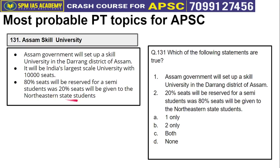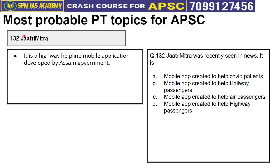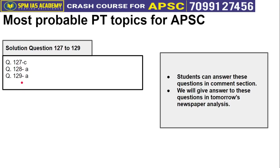Topic No. 132 is about Jatri Mitra — a highway helpline mobile application developed by the Assam government. Please attempt the question based on Topic No. 132. The answers to questions 127 to 129 from yesterday's newspaper analysis are also provided. Today's questions can be attempted and submitted in the comment section, and answers will be sent in tomorrow's newspaper analysis.